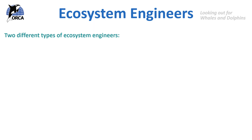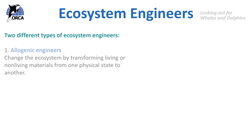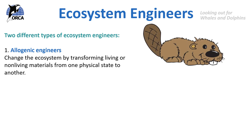There are two different types of ecosystem engineers. Allogenic ecosystem engineers change the ecosystem by transforming living or non-living materials from one physical state to another. The best example of an allogenic ecosystem engineer is a beaver. River ecosystems rely on beavers to take down old or dead trees along riverbanks to use for their dams. This allows new, healthier trees to grow in abundance. The dams divert water in rivers, creating wetlands that are homes to a huge variety of animals and plants, and these animals and plants thrive in these wetland areas.